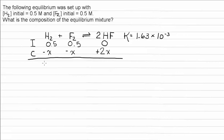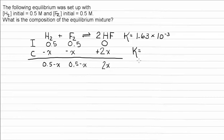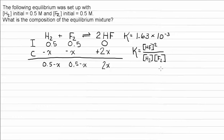At equilibrium, we have 0.5 minus x for hydrogen, 0.5 minus x for fluorine, and 2x for HF. Now let's talk about the equilibrium expression. K, the equilibrium constant, is equal to products to their orders divided by reactants to their orders. So the K expression equals HF squared — don't forget this coefficient, since equilibria are treated as elementary steps and the coefficient becomes the order. Divided by hydrogen to the first power times fluorine to the first power.